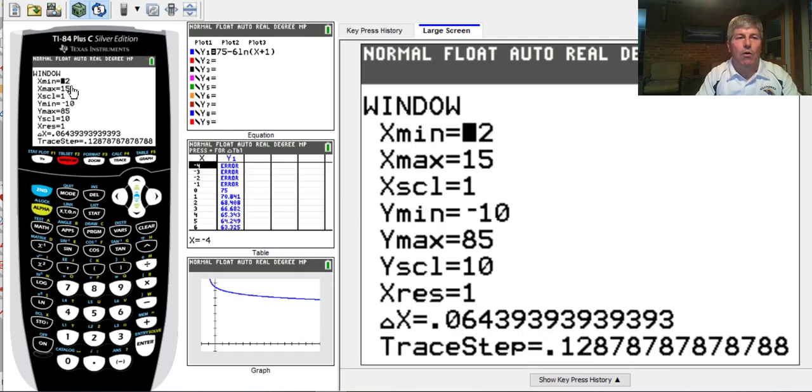When we set our window, we know our x's are going to range between 0 and 12. So I put in negative 2 for an x minimum and 15 for a max because I like to see a little bit further on either end and see my y-axis. My scale for x's, I'm just going to count by 1's.